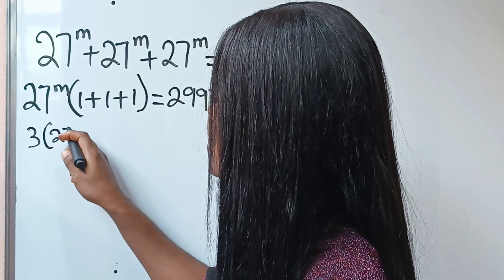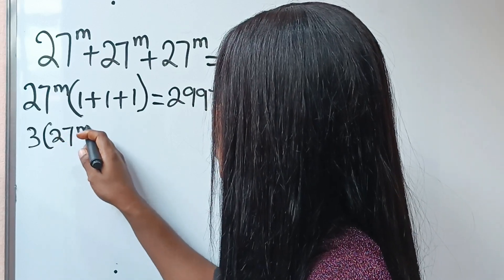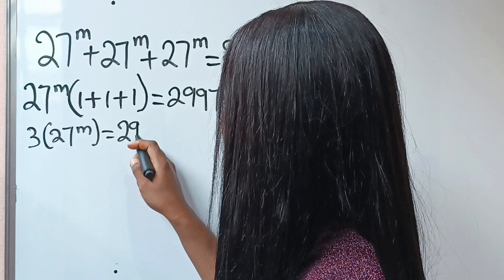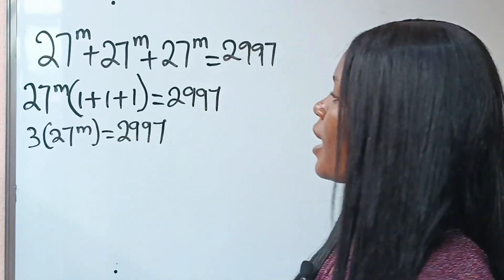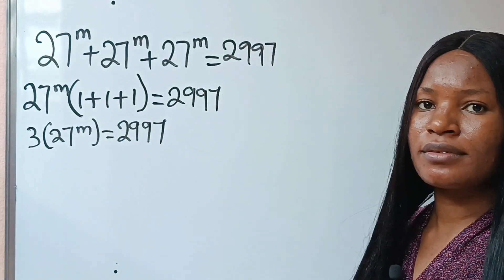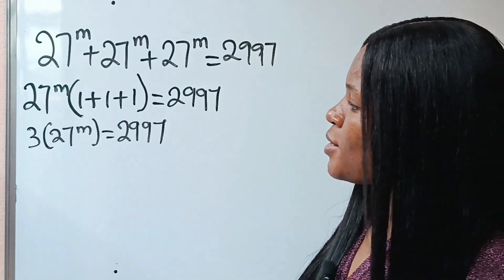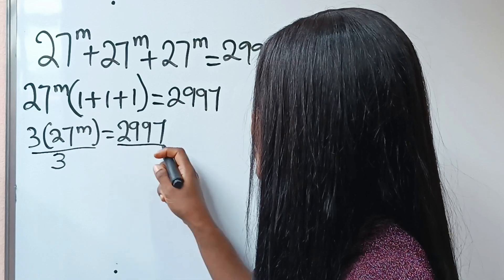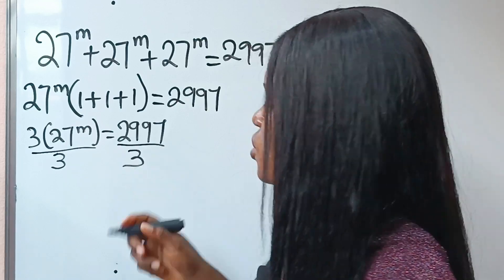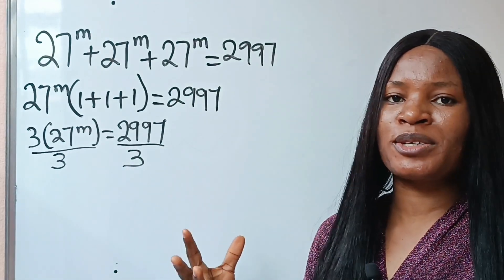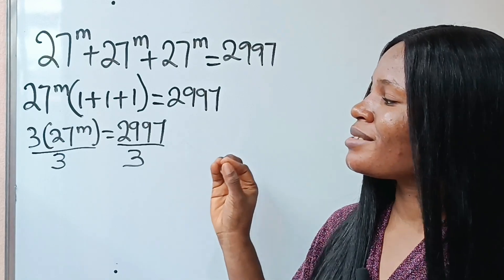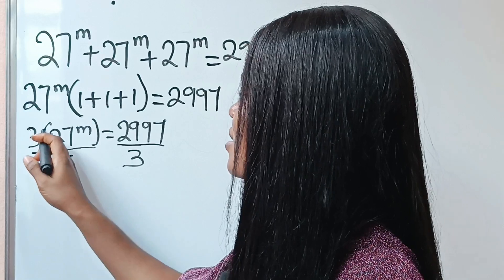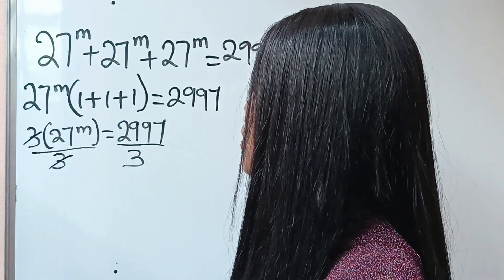This is the same as 3 multiplied by 27 to the power of m is equal to 2997. So let's divide through by 3 first to simplify the equation.